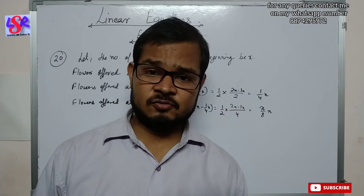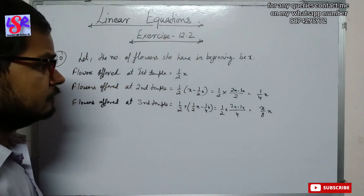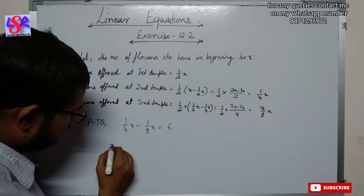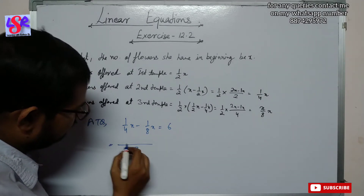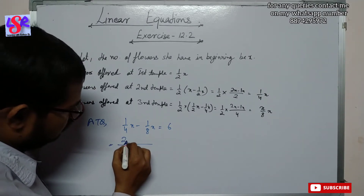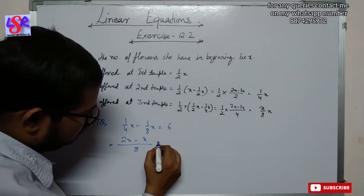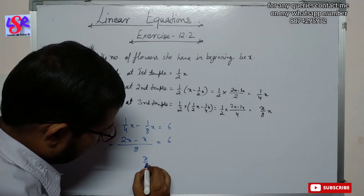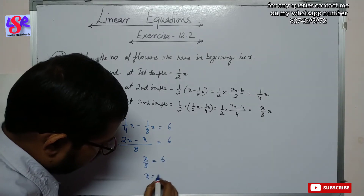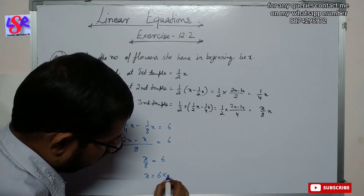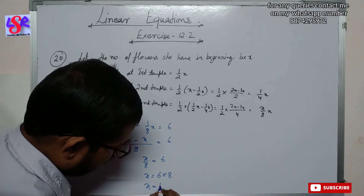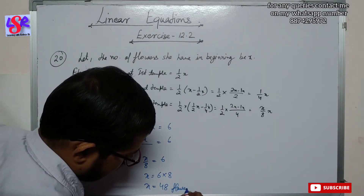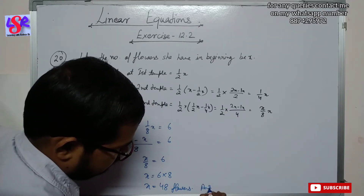She is left with 6 flowers. So according to the question: (1/4)x − (1/8)x = 6. Taking LCM of 8: (2x − x)/8 = 6, so x/8 = 6, giving x = 48 flowers as the answer.